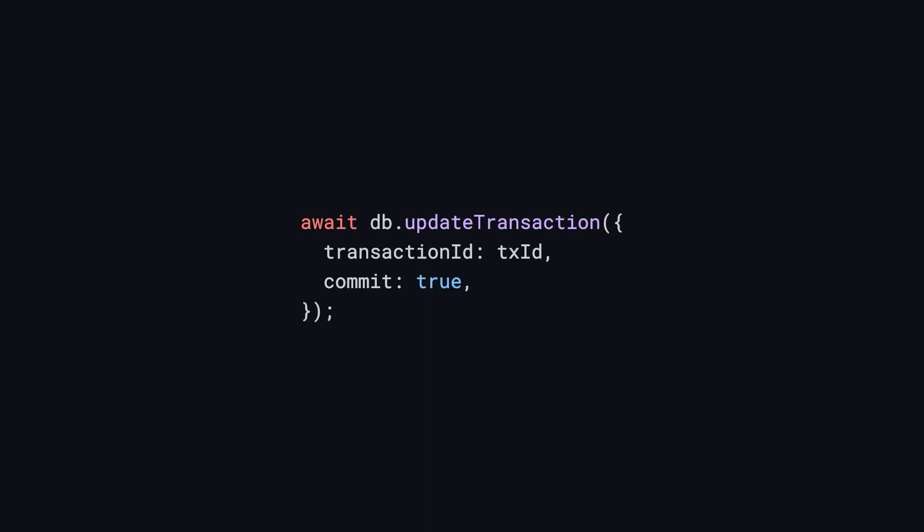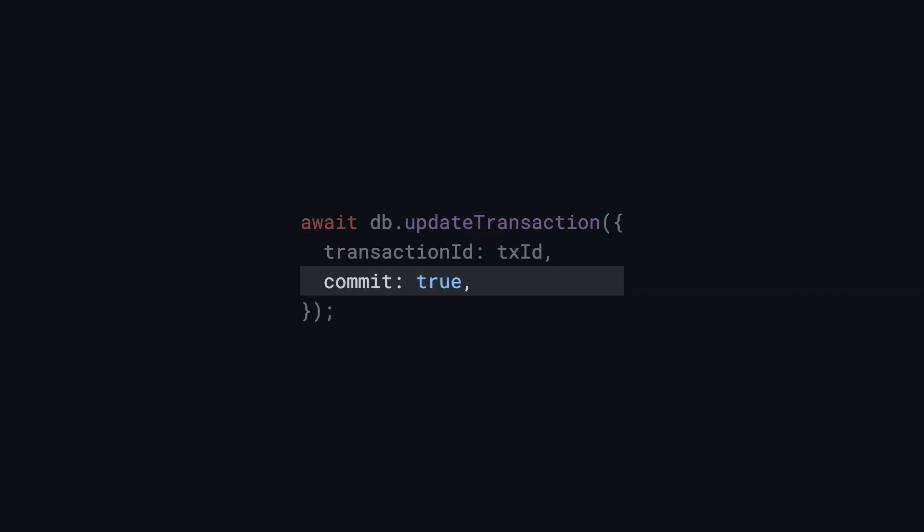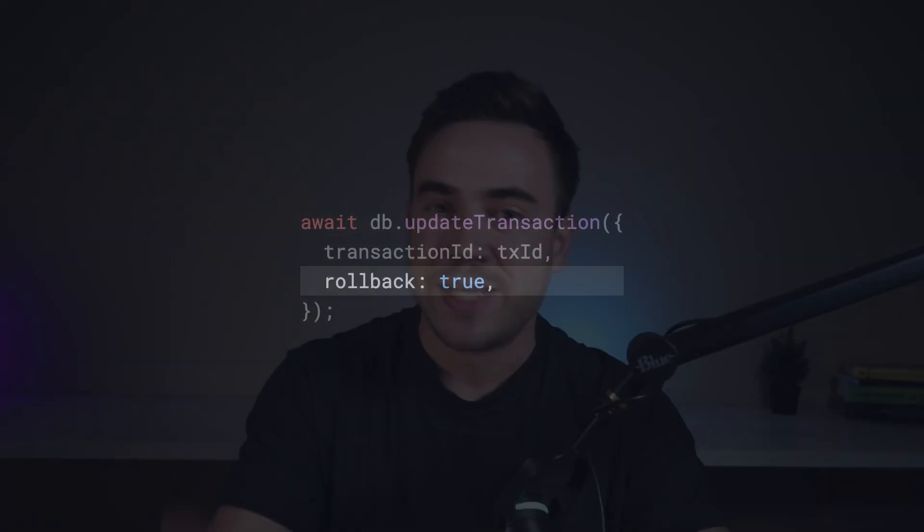Now, to actually commit the staged operations, we call the update transaction method. We pass in the transaction ID and set commit to true. If we want to roll back, we can do that as well. At this point, AppWrite takes care of the rest. If anything goes wrong in this process, we don't have to worry about it — AppWrite handles all of that for us.